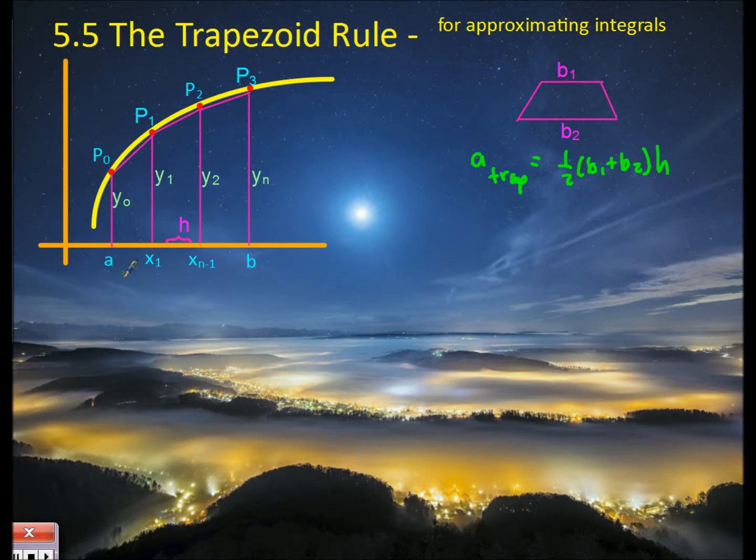Area of a trapezoid is one half base 1 plus base 2 times the height. What's unique about this formula and this technique is the y1 value, for example, is the base 1 of the trapezoid in the middle, but at the same time it's base 2 of the trapezoid on the left. So in my formula when I add up the area of all these trapezoids, the y1 value is going to get used twice. The same thing is going to happen for the y2 value. y0 and yn are only going to get used once.